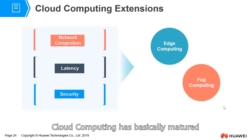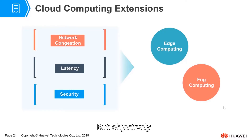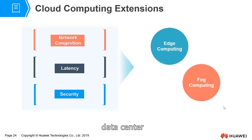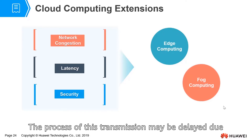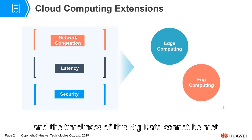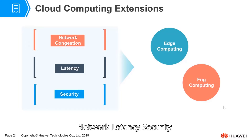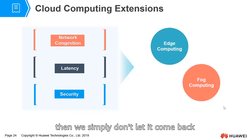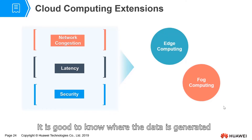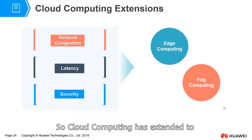After years of development, cloud computing has basically matured. But objectively, there are still some issues to be resolved. For example, network congestion. When we process big data, we need to transfer that data to the cloud computing data center. The process of this transmission may be delayed due to network congestion, and the timeliness of big data cannot be met. Another issue is high network latency and security. Since problems occur during this transmission, we should consider processing data closer to where it is generated.